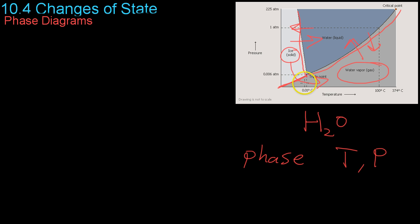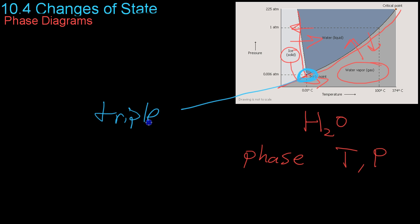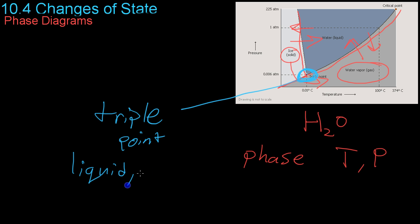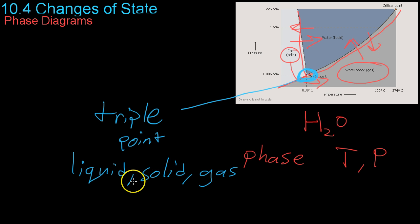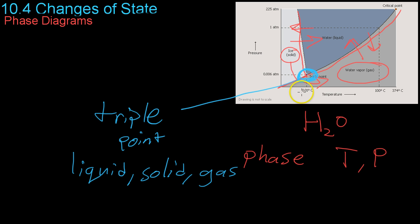Basically, all it is is a plot of the temperatures and pressures at which a certain material undergoes phase changes. Now, the point at which these three lines meet — which I'll mark with a big blue circle — is what is known as the triple point. This is a very interesting point of temperature and pressure because it is where all three states — liquid, solid, and gas — can coexist. So you can have ice, water, and water vapor all existing at 0.06 atm and 0.01 degrees Celsius.